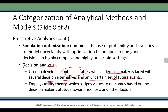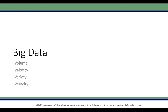Decision analysis is used to develop an optimal strategy when a decision maker is faced with several decision alternatives in an uncertain set of future events. It employs utility theory, which assigns values to outcomes based on the decision maker's attitude towards risk, loss, and other factors.